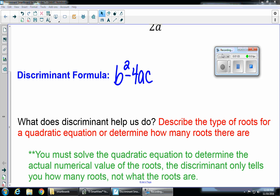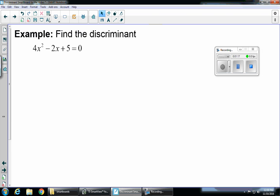So once again, the discriminant will describe the roots or tell us how many roots there are for a quadratic equation. So let's take a look at an example. Find the discriminant. 4x squared minus 2x plus 5 equals 0. So remember, our discriminant is b squared minus 4ac.